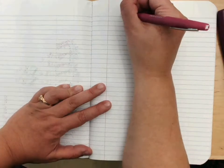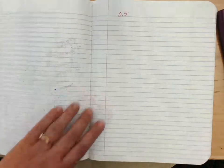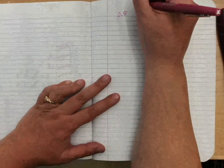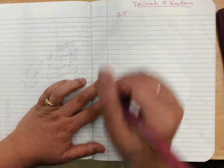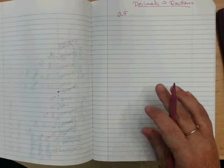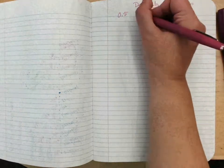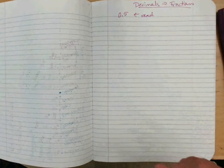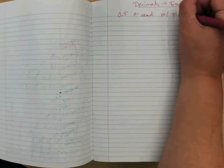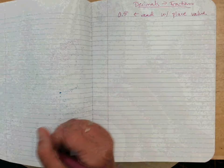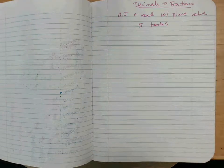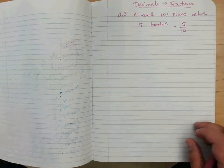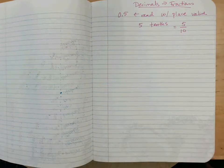Let's talk about how we make decimal numbers into fractions. Let's make up a decimal: 0.5. How do I make that into a fraction? We use the idea of place value. You might say 'zero point five,' but if we read it with place value, we say 'five tenths,' which means five over ten. Can we reduce that fraction?